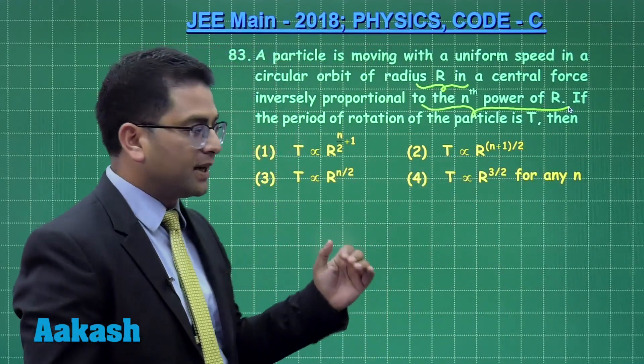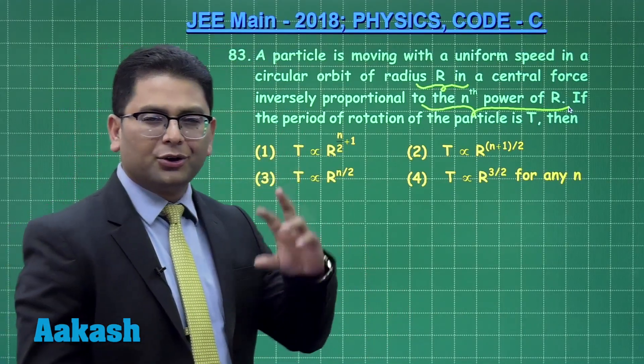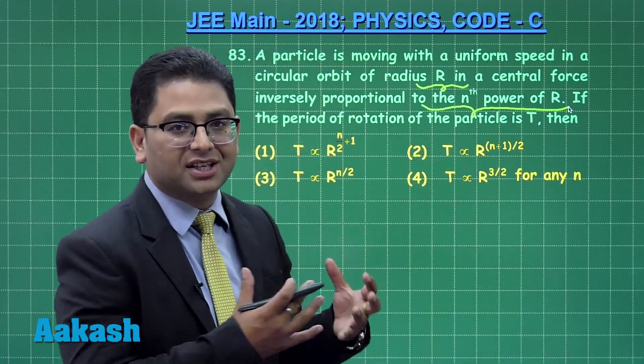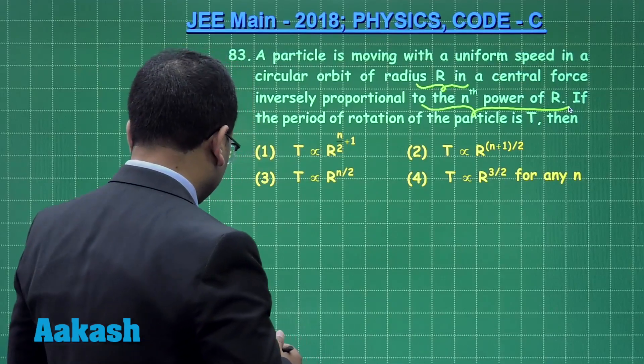Do you find a similarity in Kepler's law t square directly proportional to r cube? The question is of the same nature. This one becomes a more general one.